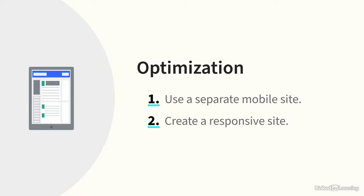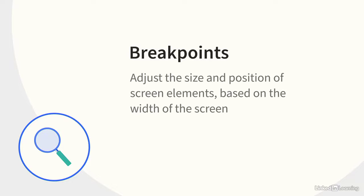The other, more modern and increasingly common way of solving for different device types is what's called a responsive site — a single design that responds to the device type by changing the content size, or actually changing the design for smaller screens. This can be done in the CSS code by setting what are called breakpoints, which adjust the size and position of elements on the screen based on the width of the screen. This method may limit how complex your designs can get, but it's much faster and easier to maintain.